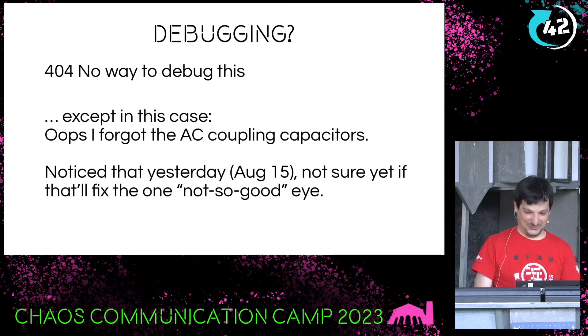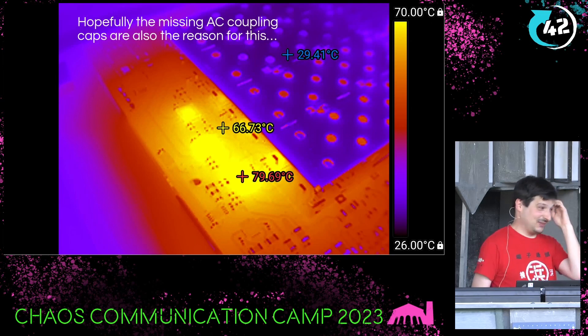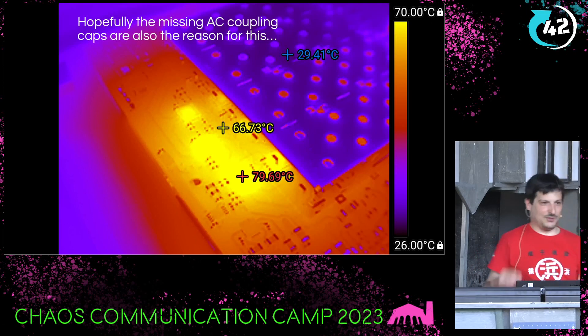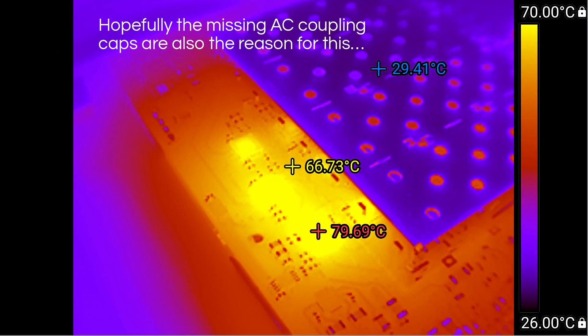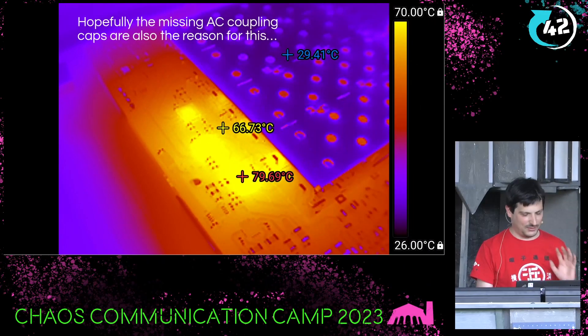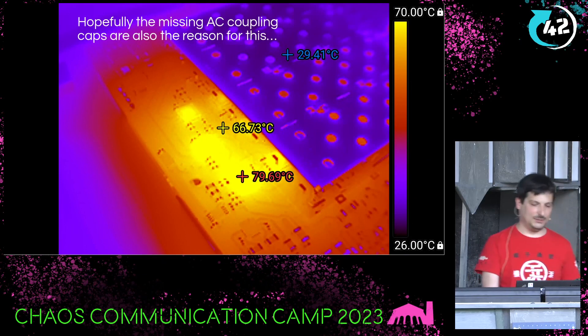It does actually work, which is kind of funny. It's hopefully also the reason the chips are getting hot — if you have a difference in DC levels between the two chips, the sender might output 1.6 volt common mode and the receiver might try to pull down to 1.2 volt common mode, with 0.4 volts being lost somewhere in the middle. That would explain why the chips are getting so hot.